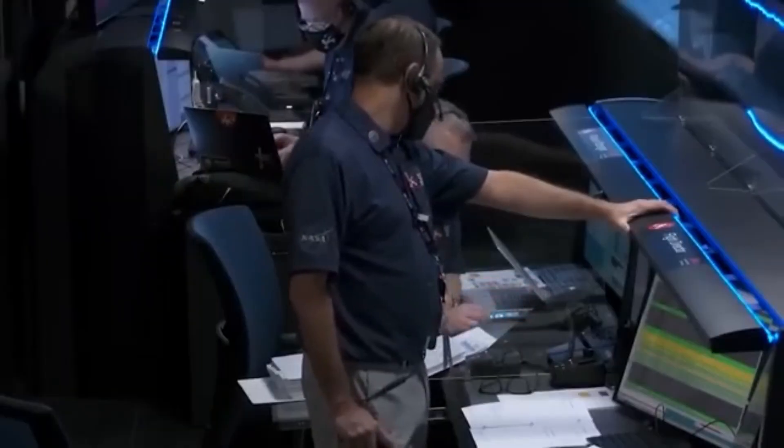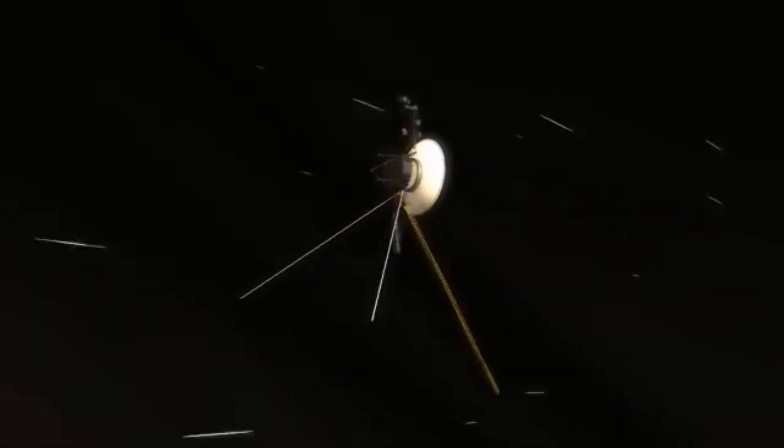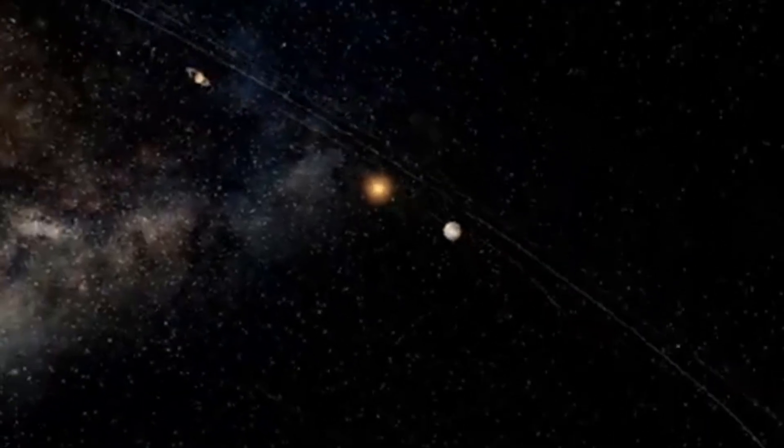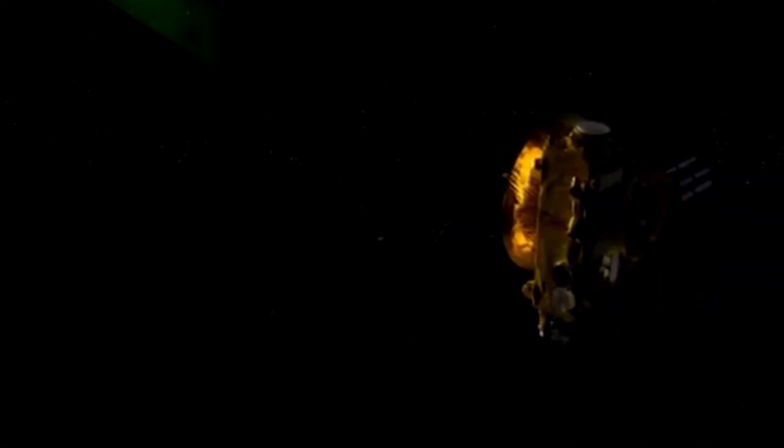Launched in 1977, Voyager 1 is now over 24 billion kilometers from Earth and still transmitting. Its signal is picked up by NASA's Deep Space Network, a global array of highly sensitive radio antennas.